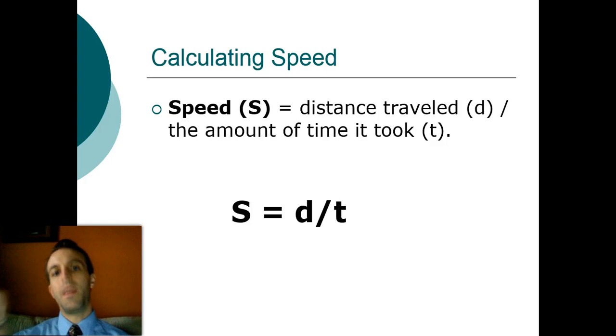Speed is just a measurement of the distance you traveled divided by the amount of time it took to get there. Speed does not care what direction you are going, north, south, east, or west. All it is is distance over time. Speed equals distance over time.